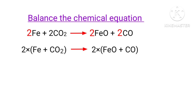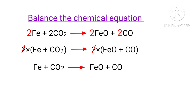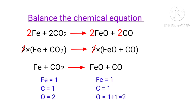Now we can cancel the same terms, so Fe + CO₂ gives us FeO + CO. The equation is now balanced. There are one ferrous atom, one carbon atom, and two oxygen atoms on both sides.